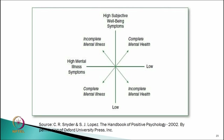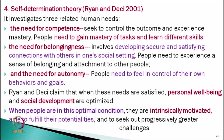Another revision of this model divides the population into complete mental illness, incomplete mental illness, incomplete mental health, and complete mental health. Apart from previous theories, let us know a different model significantly different from the previous ones — more based on motivation, needs, and desires.